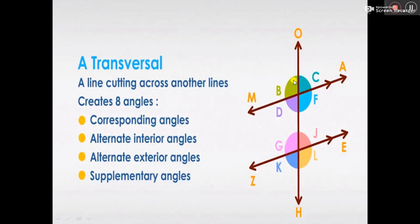In a transversal, we have eight angles. Eight angles are created. You can see this: B, C, D, F, G, J, K, and L, right? These angles have their specific names too, just like the way we looked at last week with different types of angles. We also have a special type of angles for this form of lines.